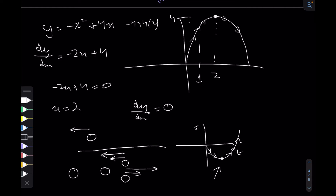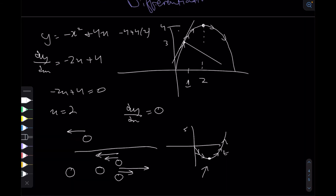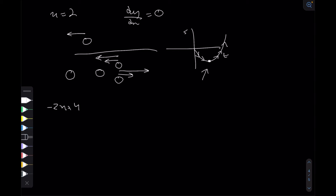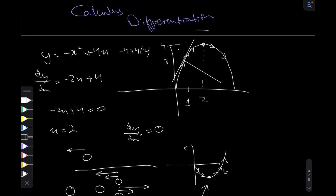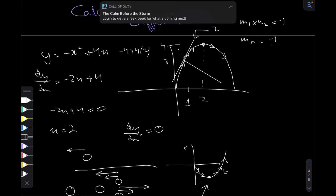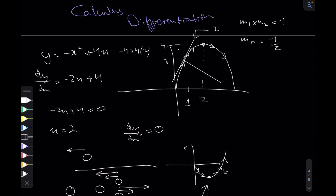Now at the point (1, 3), suppose the question asks me to find the equation of the normal at this point. A normal is simply the perpendicular to the tangent. We know the gradient function is minus 2x plus 4. Plugging in x equals 1 gives minus 2 plus 4 equals 2, so the gradient of the tangent is 2. From coordinate geometry, if two lines are perpendicular, m1 times m2 equals negative 1, so the gradient of the normal m_n equals negative one half.